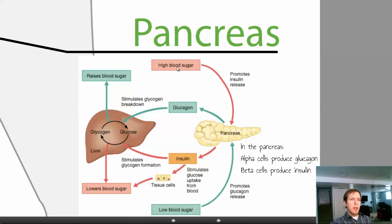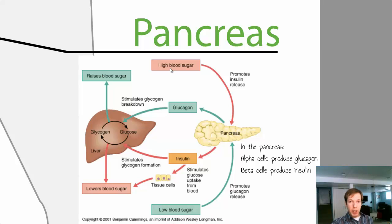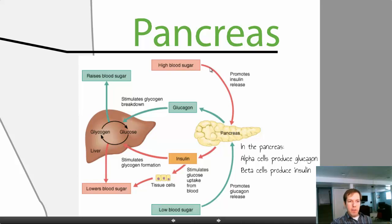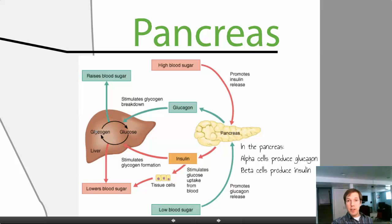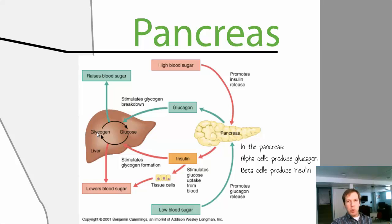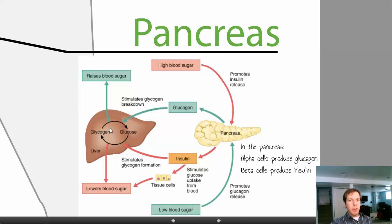If your blood sugar is too high — for example, you just had a big meal or drank a soda — you've got a lot of sugar in your blood as a product of digestion. That sends a signal to the pancreas, where beta cells make insulin. Insulin tells cells to take up sugar from the blood, reducing blood sugar levels. It also sends a signal to the liver to take glucose and convert it into glycogen — a polymer of glucose that stores energy — which gets stashed in the liver or muscles.